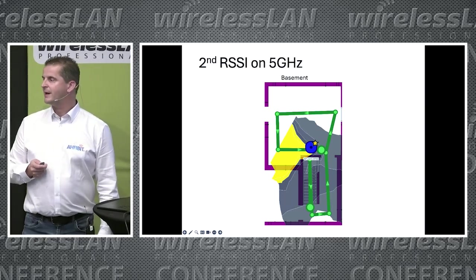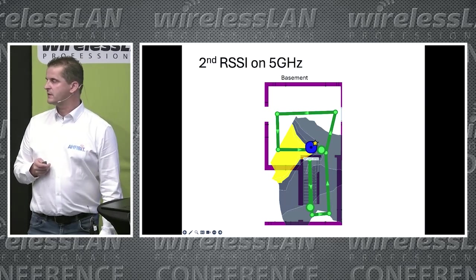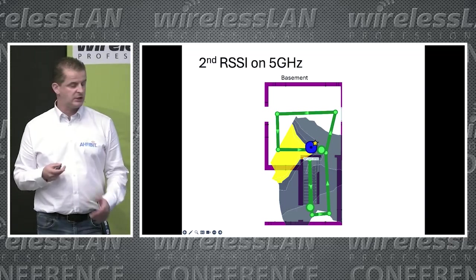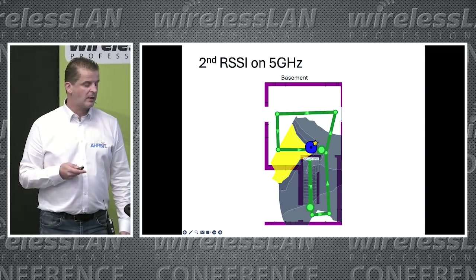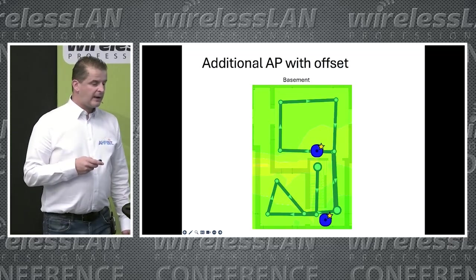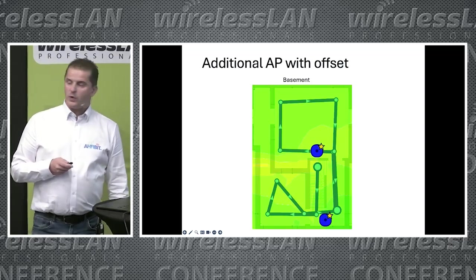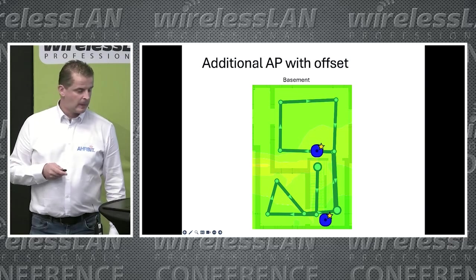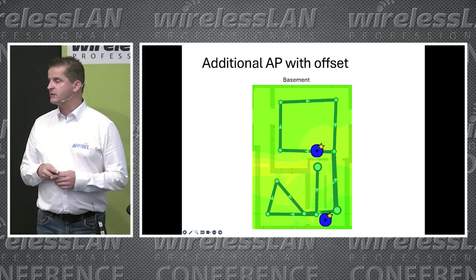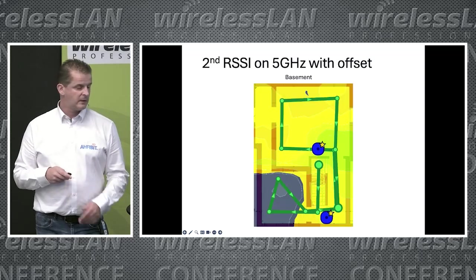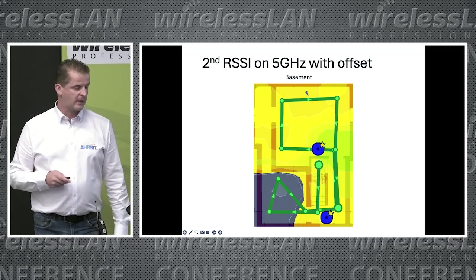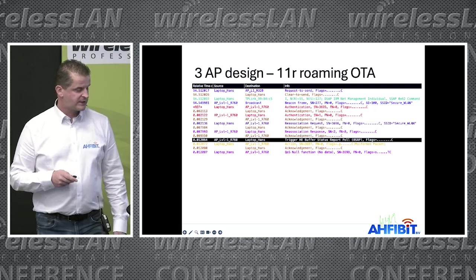To fix this, I added an additional AP in my basement. After that, the primary signal strength with offset looked good, and the secondary signal strength with offset was also sufficient — so it should work.